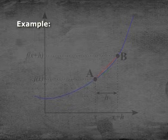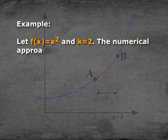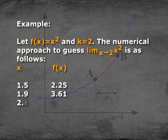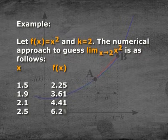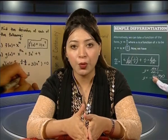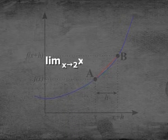For example, let f(x) = x² and k = 2. The numerical approach to guess limit x→2 of x² is as follows. Taking values for x and the corresponding values of f(x): if x = 1.5, f(x) = 2.25; if x = 1.9, f(x) = 3.61; if x = 2.1, f(x) = 4.41; if x = 2.5, f(x) = 6.25. Hence, we infer that for x sufficiently close to 2, x² can be made sufficiently close to 4. That is, limit x→2 of x² is equal to 4.